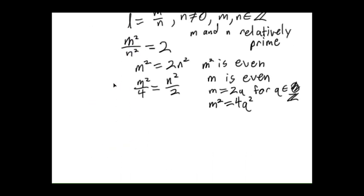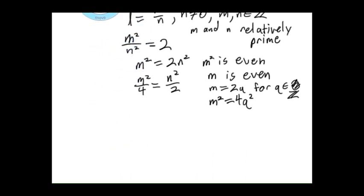From this, we can conclude then that n squared is even, and by a similar argument, n is even.